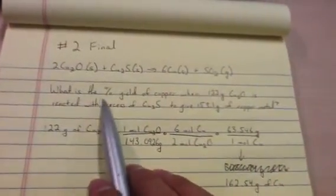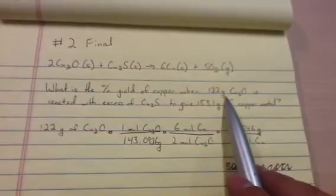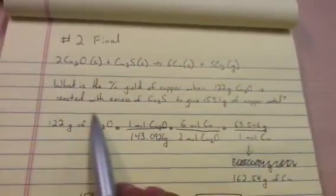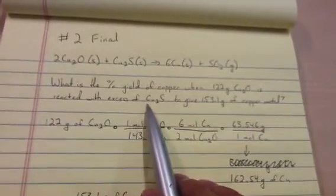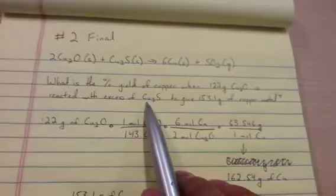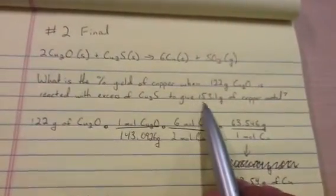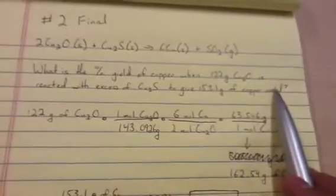So the question is, what is the percent yield of copper when 122 grams of copper oxide is reacted with excess of copper sulfide? Actually, this isn't copper sulfide, is it? No, this is copper sulfide, sorry. Copper sulfide to give 153.1 grams of copper metal. Sorry, it's been a very long day.